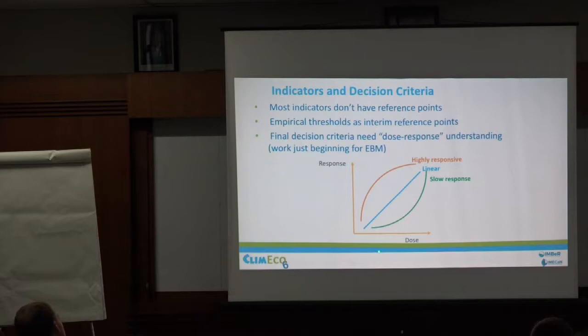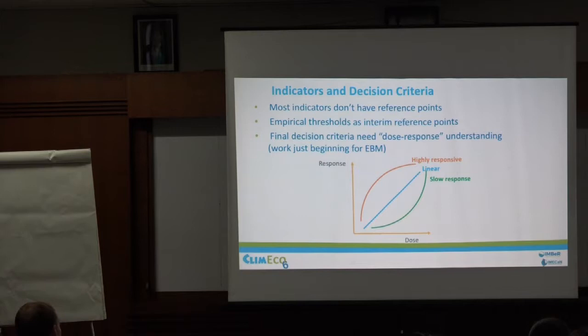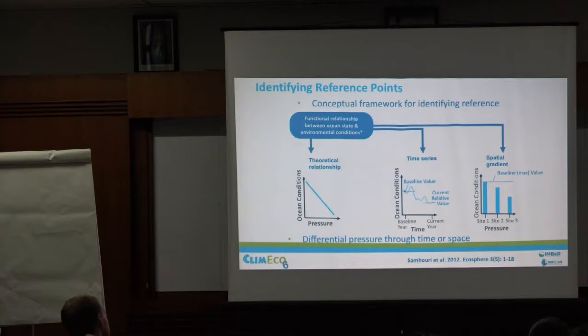When defining indicators and reference points, you need to think about the shape of the pressure-response relationship. Ideally you have a linear one — they're the easiest to understand. A highly responsive curve can be a bit more precautionary; you might get some false alarms early on, but you'll always have warning in plenty of time. Sometimes you're stuck with a slow response curve, which doesn't tell you much until it's almost too late, but at least it gives some forewarning. If you can understand which type you're in, you can build that into your precaution — under a slow response curve, you'd set your limit reference point earlier to give you extra time to realise something is happening.